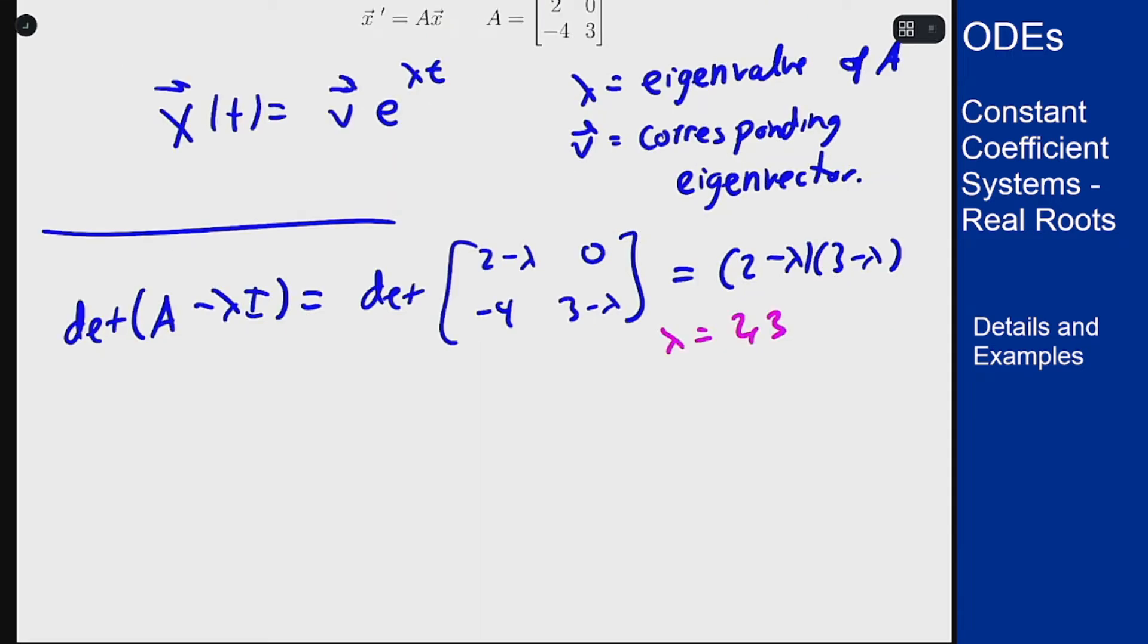For lambda equals 2, the matrix becomes 0, 0, minus 4, 1, which will tell us that 1, 4 is an eigenvector. After writing that as a system of equations, it only has one equation. That bottom one tells us minus 4 v1 plus v2 equals 0, and 1, 4 satisfies that.